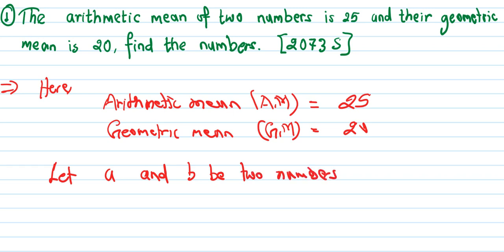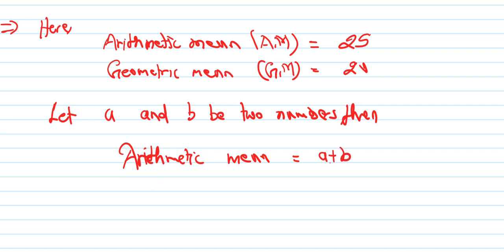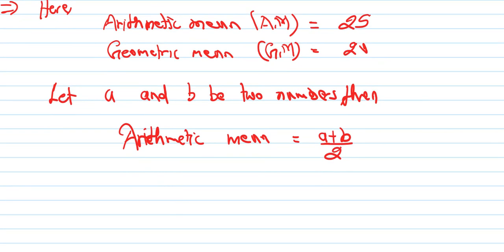Now we write the two numbers A and B. We have arithmetic mean equal to 25 and geometric mean equal to 20. Using the basic formula for arithmetic mean, we will write the equations.